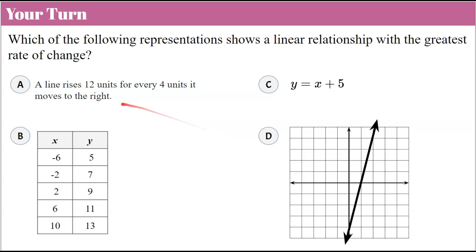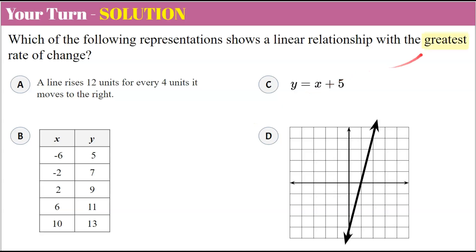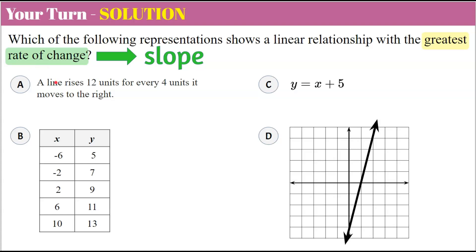Here's another one for you to try. We're asked which of the following representations shows a linear relationship with the greatest rate of change. You have 4 answer choices to pick from. Please pause the video, do your best work, and then come back to see mine. Welcome back. We want to find the function with the greatest rate of change — rate of change is another word for slope. So we're going to identify the slope or rate of change for each of the four and determine which one is greatest.